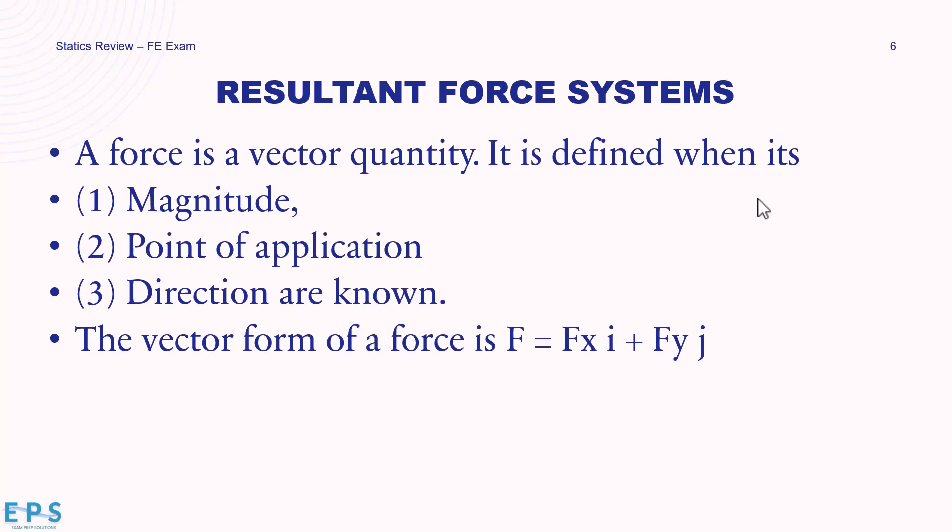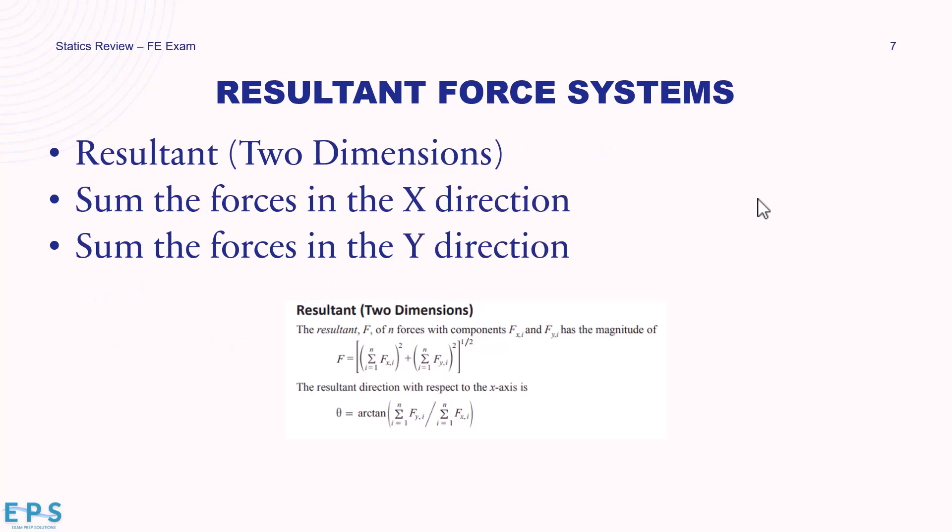More important than the pure vector form is how it applies to engineering principles. For a resultant in two dimensions, we sum all forces in the x direction and sum all forces in the y direction, square each, sum them, and take the square root — that gives you the resultant force. You can also find the direction angle by taking the arc tangent of the sum of y-forces divided by the sum of x-forces.